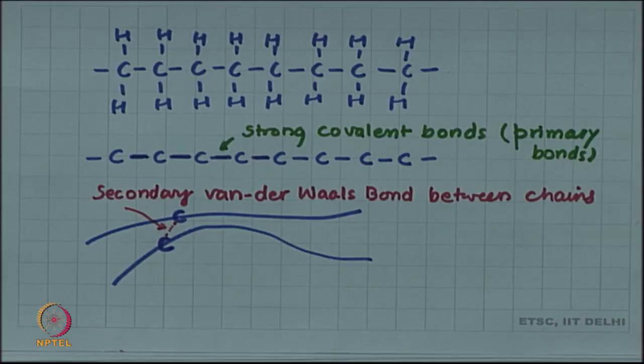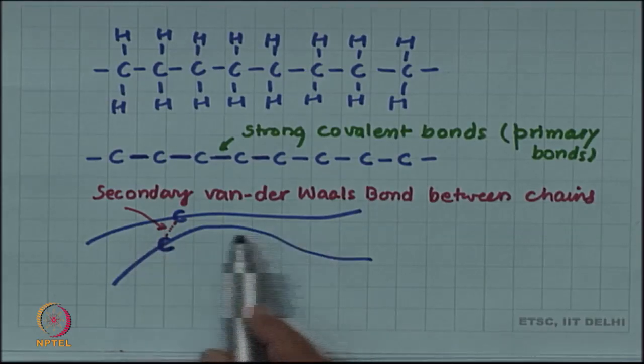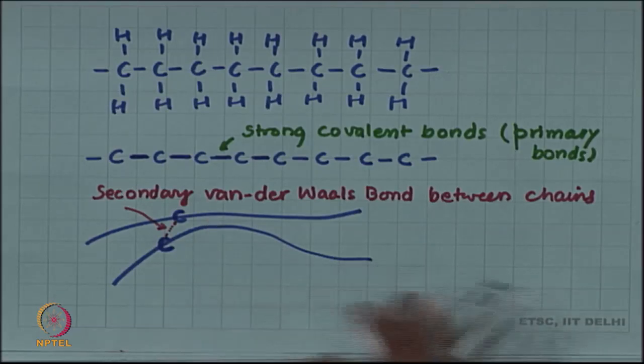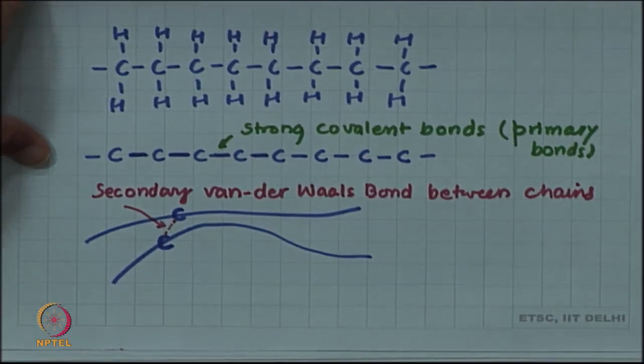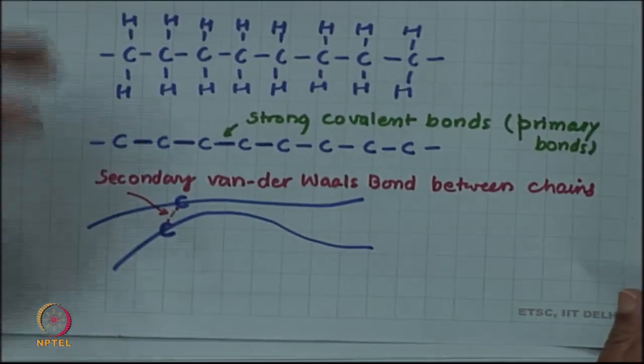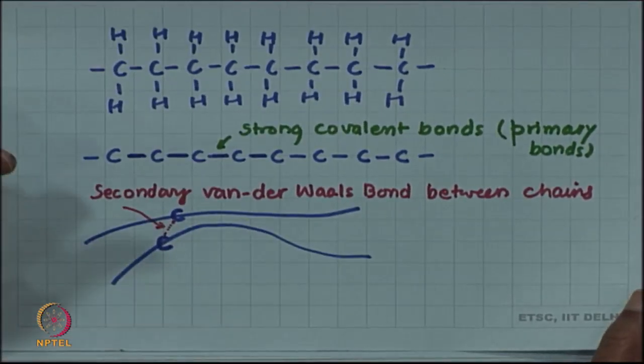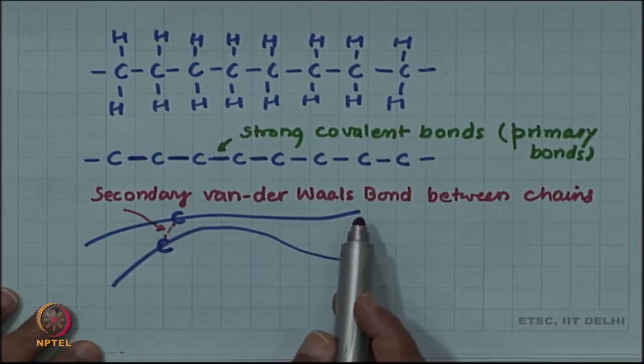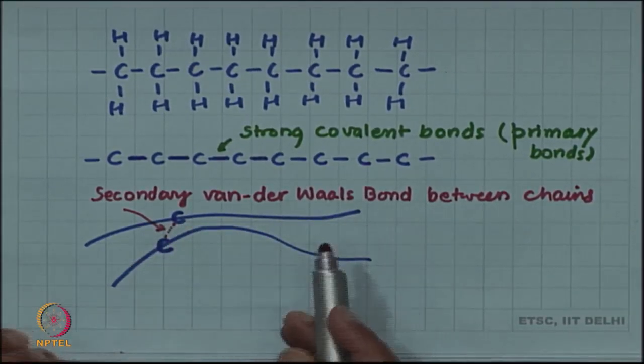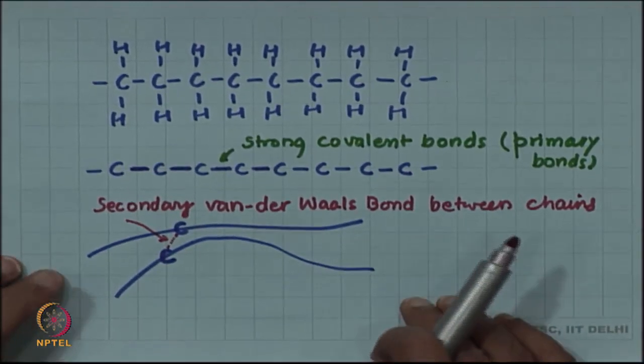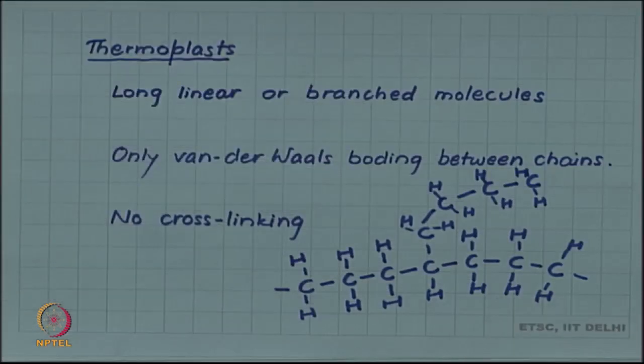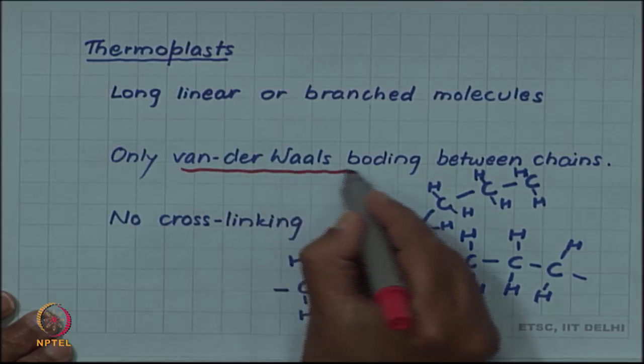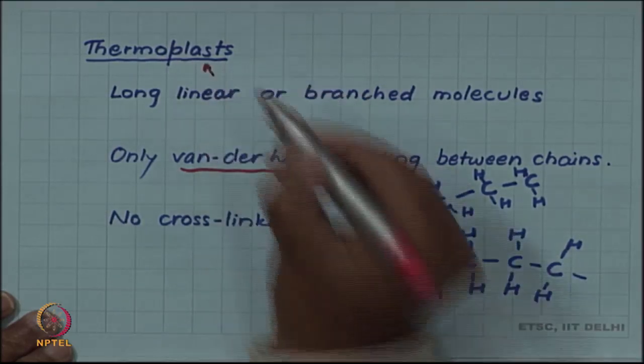If only secondary bonds like this are there, one chain is more or less free with respect to the other chain and can slide easily. The deformation of such polymers is easier. That is why when it is heated at higher temperature the molecular vibrations are sufficient to overcome these van der Waals bonds and one chain can slide with respect to the other chain and deformation or molding is possible. That is why these thermoplasts have only van der Waals bonds which actually gives them the plasticity.